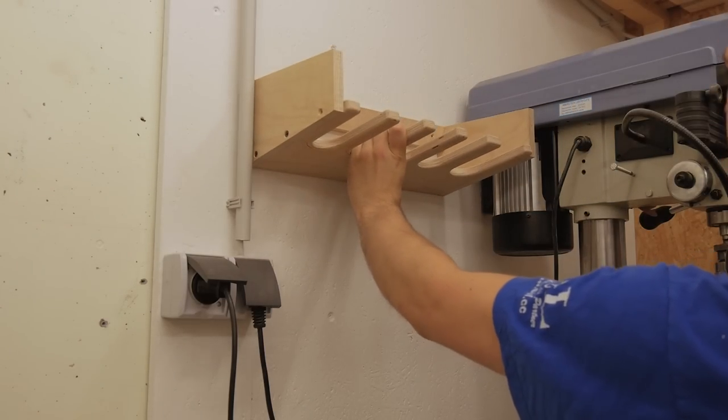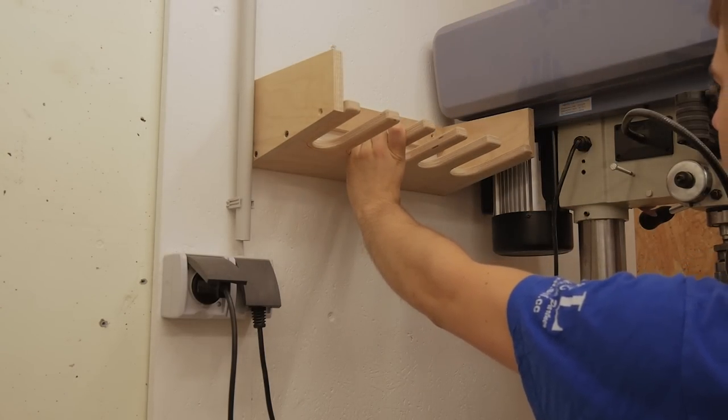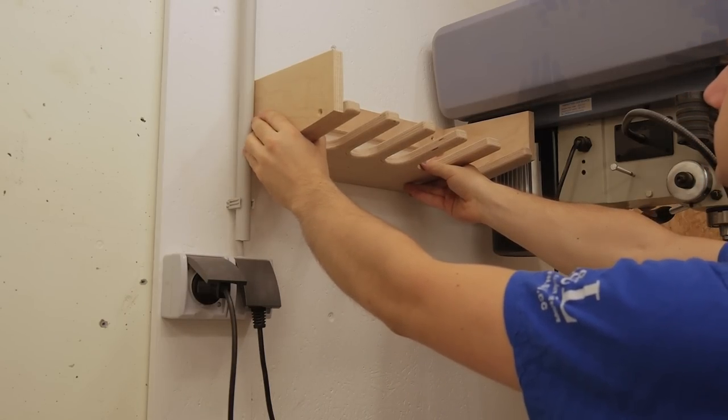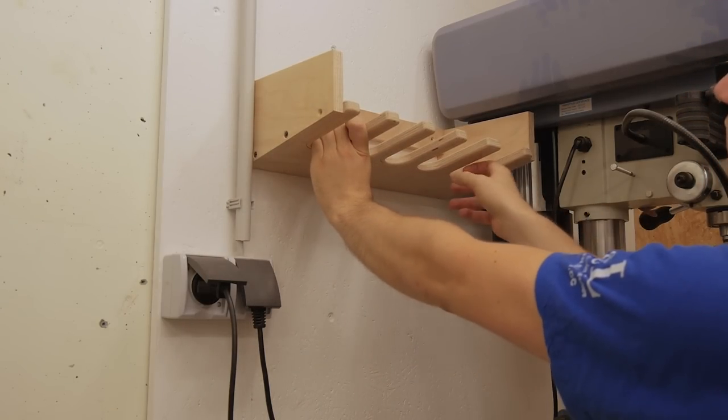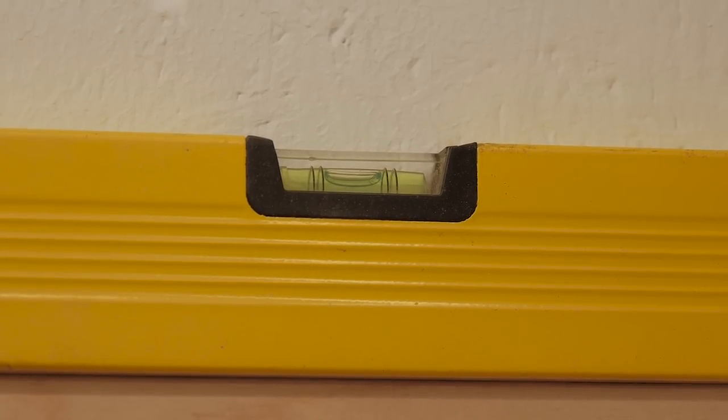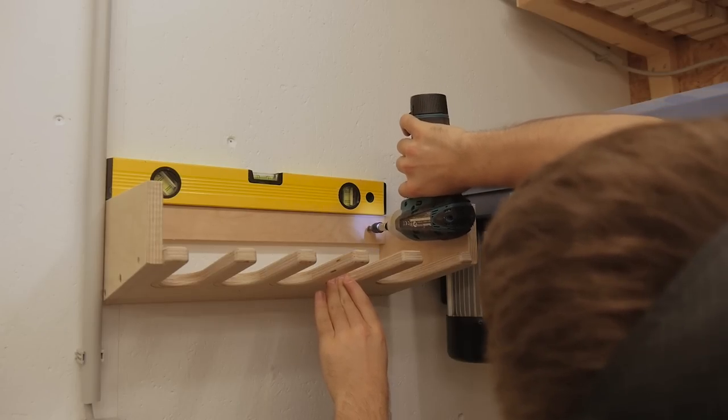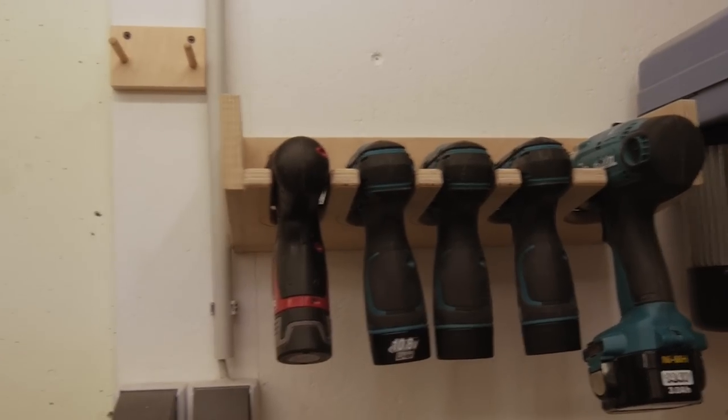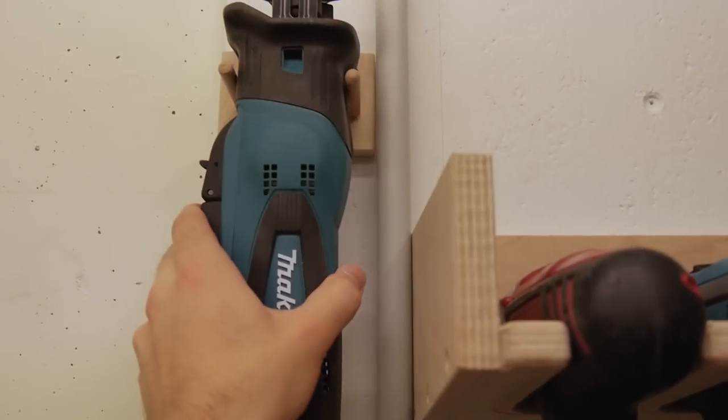Now to mount it here on the wall, I have to make sure that I can still open the drill press just for changing the belt speed. So right about here is a good position. And while I was at it, I also made a very simple holder for this guy.